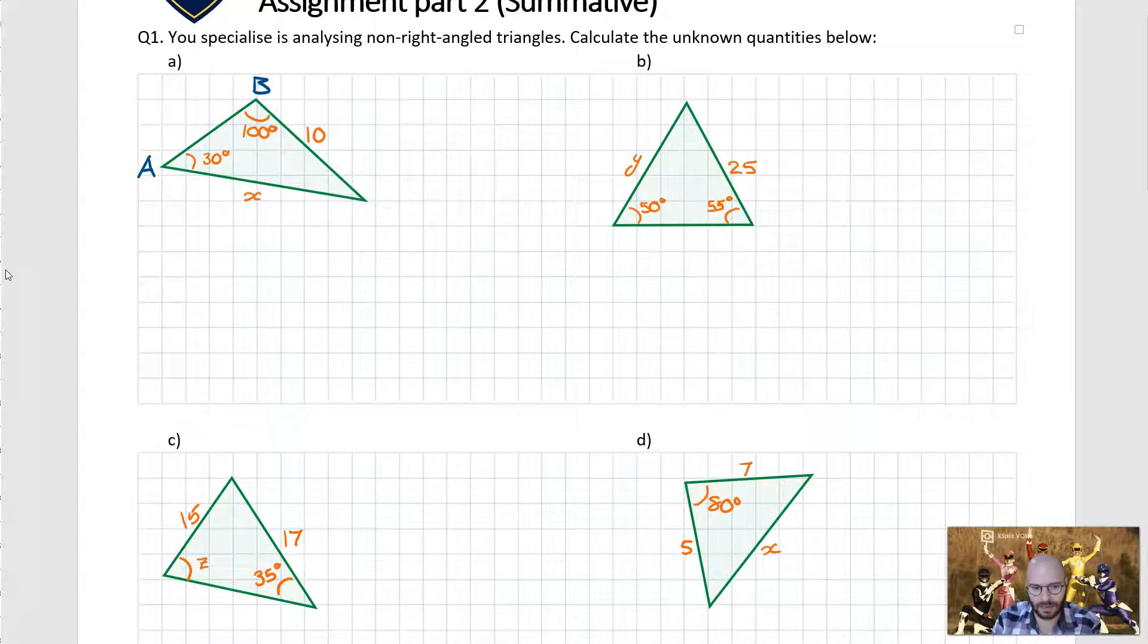So angles A and B, and opposite angle A we have side A, and opposite angle B we have side length B. Now because of this we're using the sine rule. We're going to solve for the unknown side length. So we're going to go B over sine B is equal to A over sine A. Subbing in our quantities we're going to get X over sine of 100 and then we're going to get 10 over sine of 30.